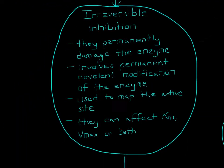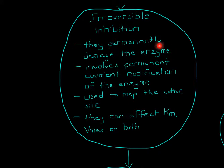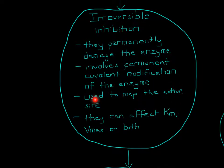Irreversible inhibition is where the inhibitor permanently damages the enzyme, or it involves permanent covalent modification of the enzyme. It can also be used to map the active site, and it can affect KM, Vmax, or both. If it bound to the active site, the affinity for the substrate goes down, which affects Vmax because the enzyme is essentially put out of commission — it can't create product, and you also reduce the total enzyme.